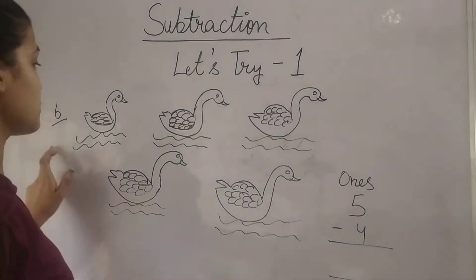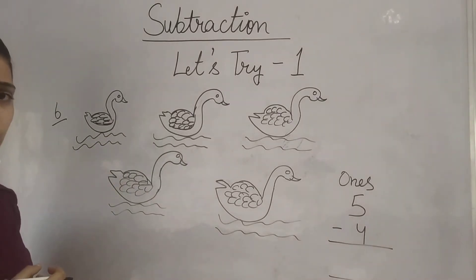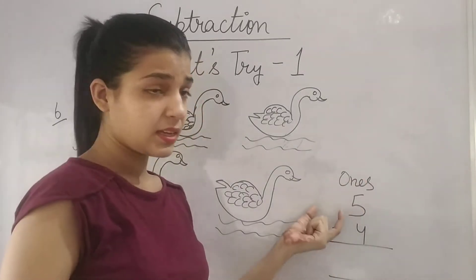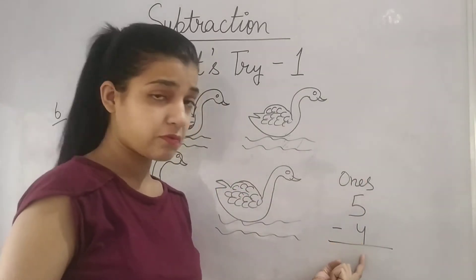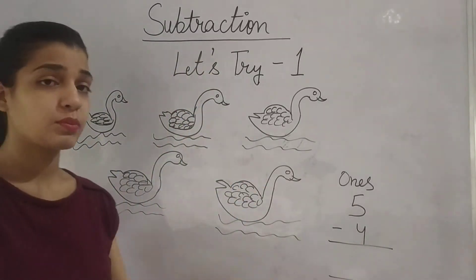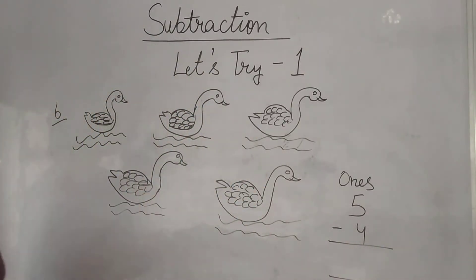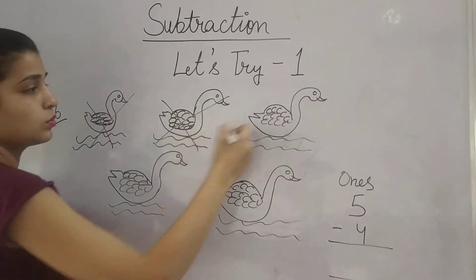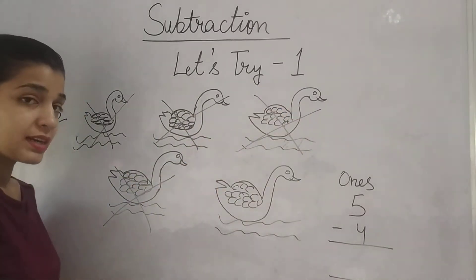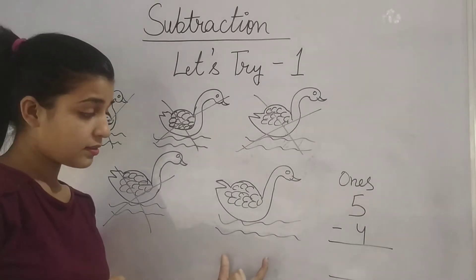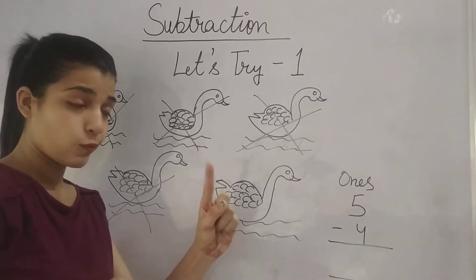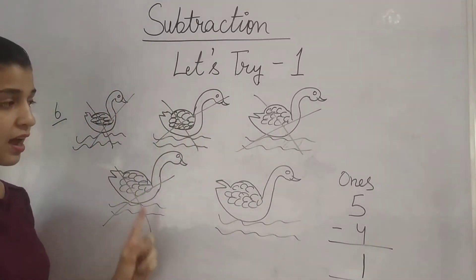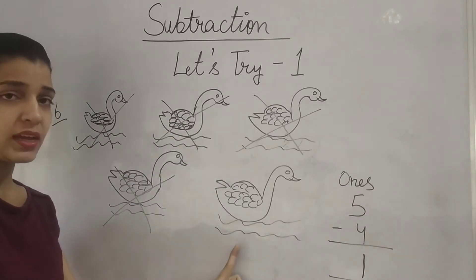Now the next one is Part B. There are some ducks and the question says: this is the 1s column, you have 5 ducks and out of that you have to subtract 4. So let's start — subtract 4: 1, 2, 3, 4. Now how many ducks do you have? Only 1. We had 5 ducks; after subtracting 4 we have only 1 duck.